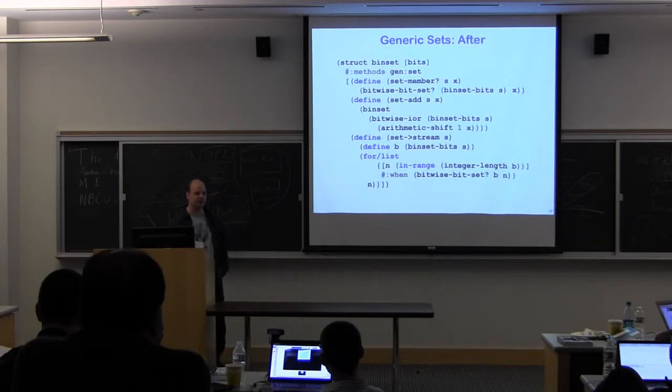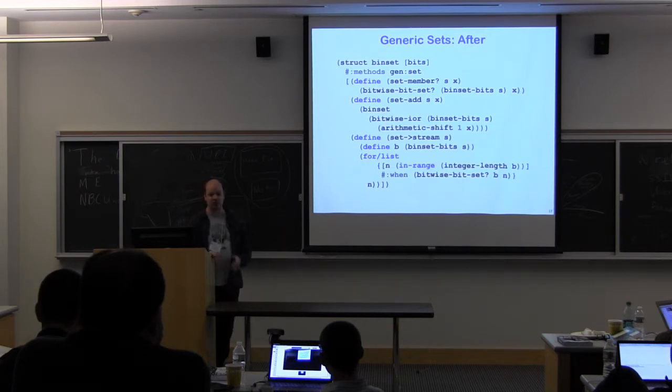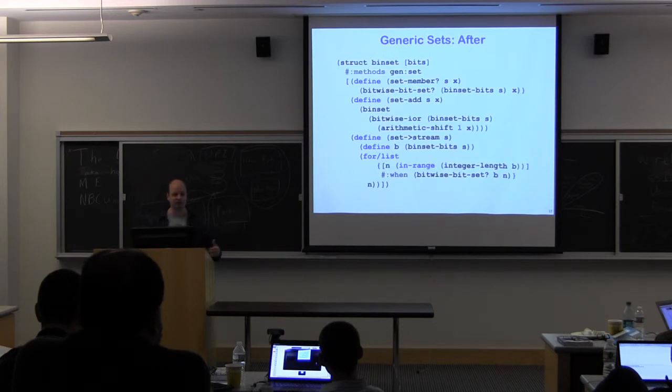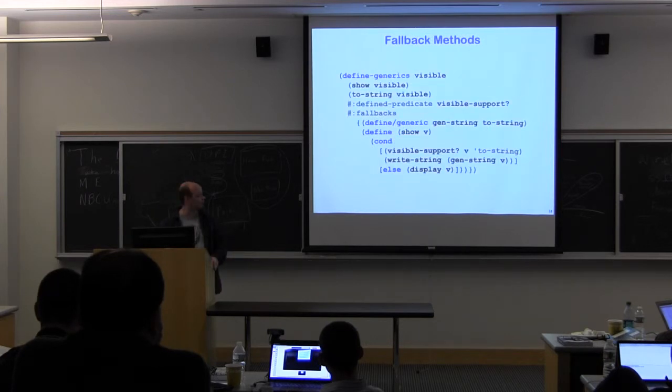And that's using a new feature of generics called fallback methods, which for sets are already defined. There's fallbacks for most of the methods. But I'm going to take a quick look at what it looks like to define a new generic interface with fallbacks for some other purpose, to see how we can use them for things beyond sets.